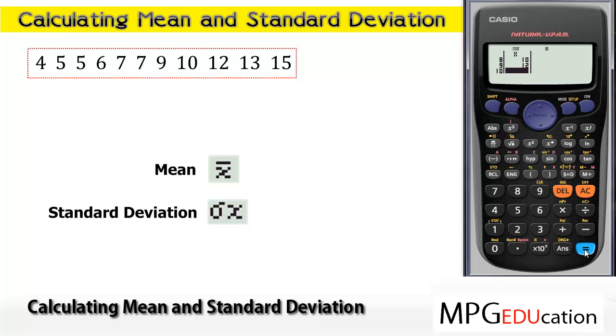Just make sure you press equals after each piece of data, and most importantly, after the last piece of data. So there's 15, 11 pieces of data all into that table.